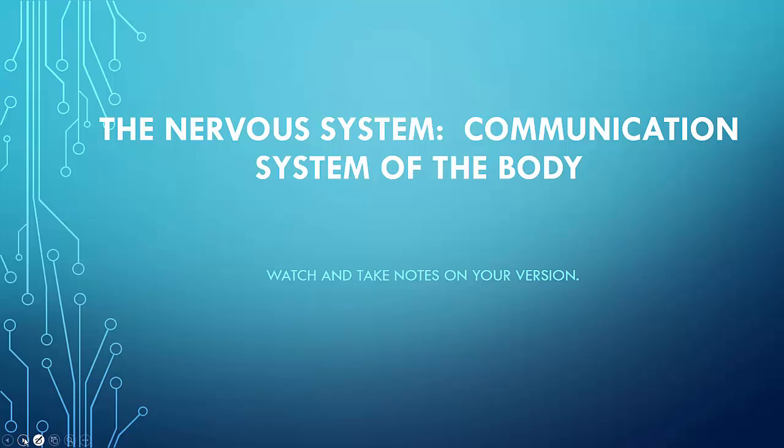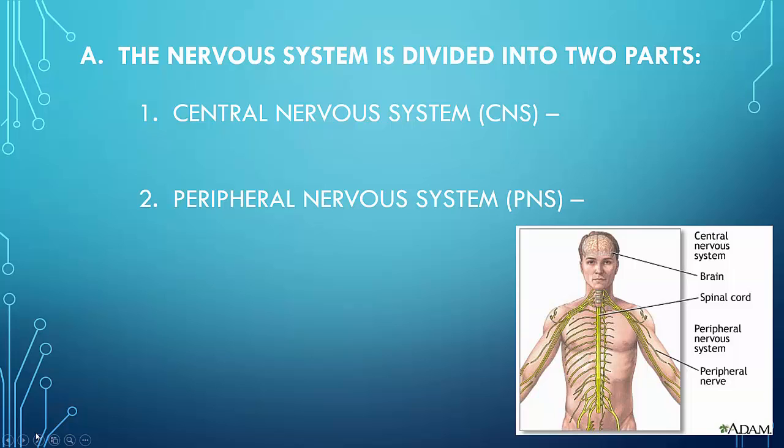The nervous system is divided into two parts. The central nervous system, referred to as the CNS, is particularly the brain and the spinal cord. As you can see on the picture, they're all labeled here for you. Then we have the peripheral nervous system, called the PNS, and the peripheral nervous system are the peripheral nerves through the body.